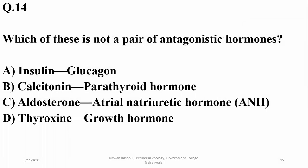Which of these is not a pair of antagonistic hormones? Insulin is antagonistic to glucagon, calcitonin to parathyroid hormone, and aldosterone to ANH — because ANH reduces sodium absorption while aldosterone increases sodium absorption. But thyroxine and growth hormone are not antagonistic to each other. So D is the right option.